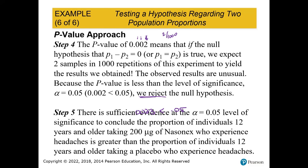The conclusion sentence is five sentences long, but you don't necessarily have to type all of that every time. I would probably say: there is sufficient evidence to say the proportion of individuals 12 and older taking Nasonex who get headaches is greater than the proportion of 12 years and older taking the placebo getting headaches. There are a few ways to shorten the conclusion sentence a little bit.